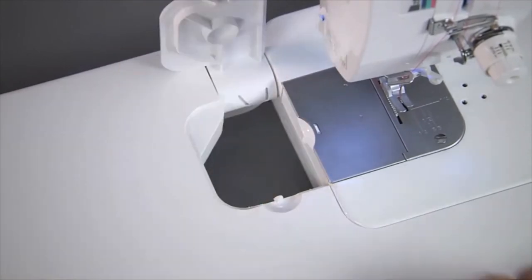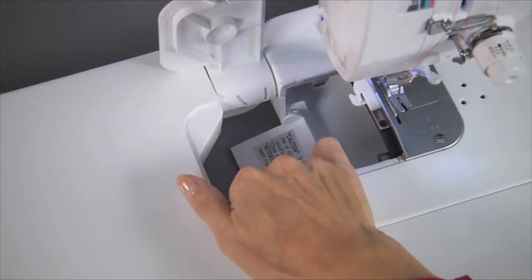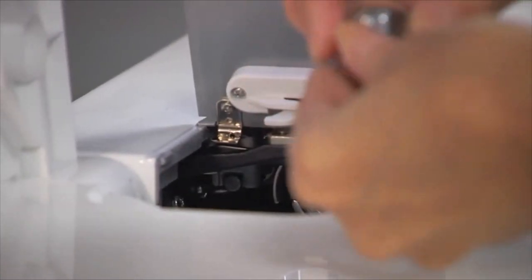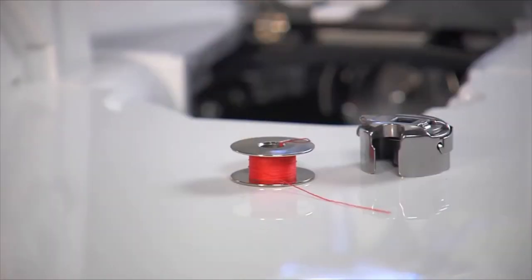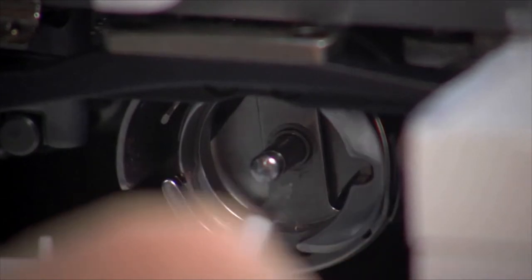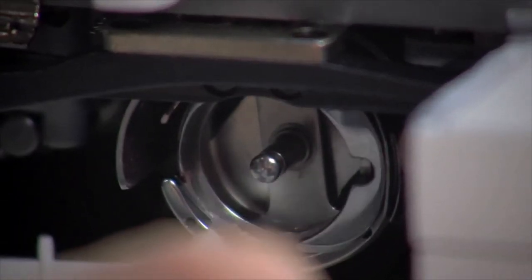I can reach right in and access the bobbin through the side cover. The PQ1500SL uses a metal bobbin both for durability and because it holds more thread. You wouldn't want a small bobbin on a machine that moves this fast, would you? The location of this cover makes care and maintenance around the bobbin case a breeze.